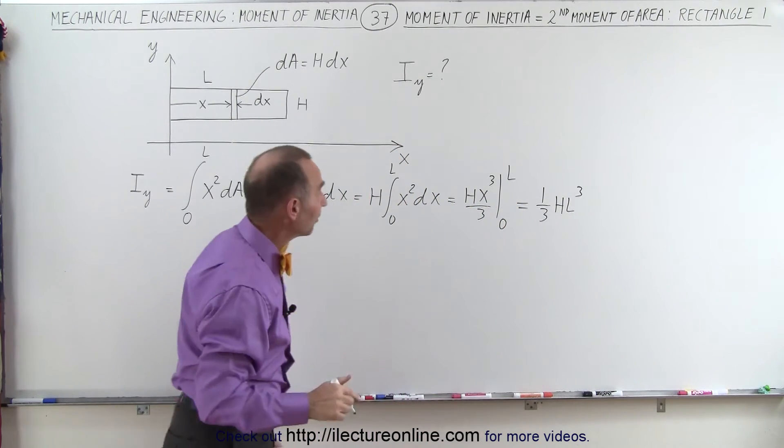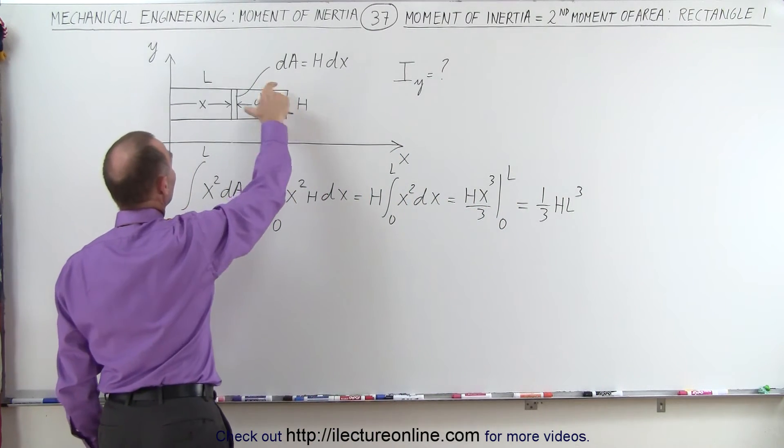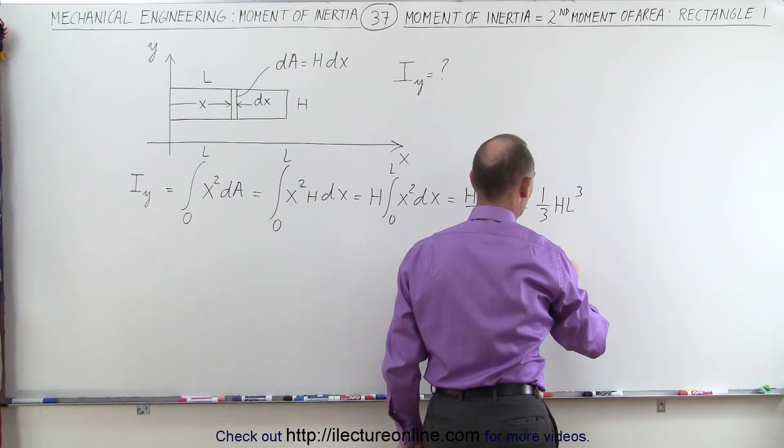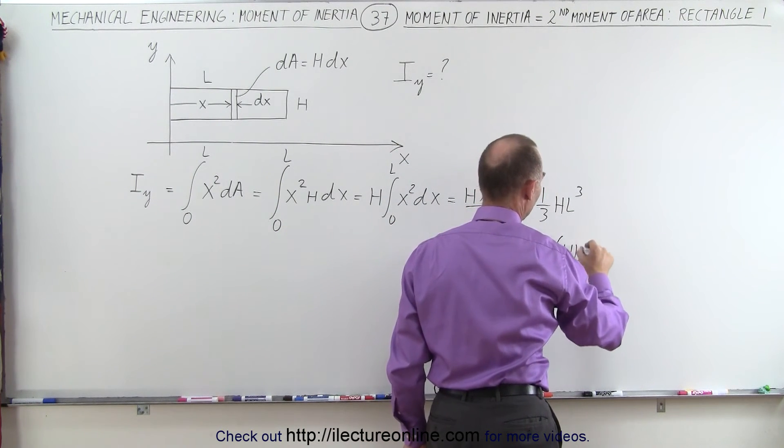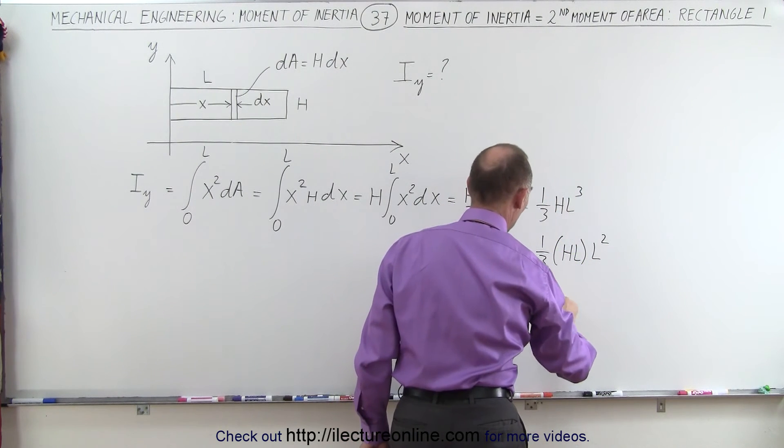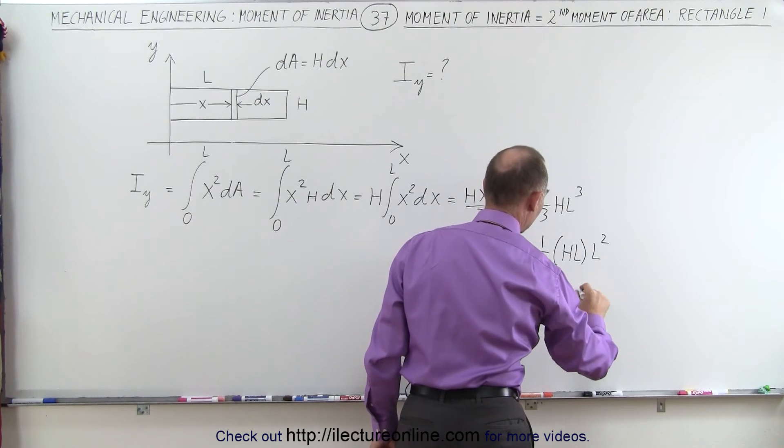Of course, we realize that the area of the rectangle is h times L, so we can factor out an h times L. This can be written as one-third h times L, and that leaves us with an L squared, or this is equal to one-third A L squared.